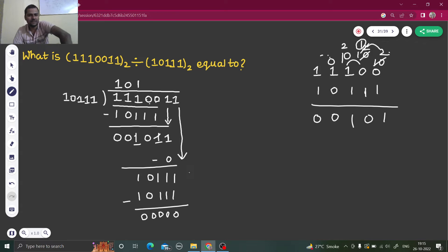So finally, the dividend was one, one, one, zero, zero, one, one. This was the division and finally what you are getting, your result is your quotient. So 101 is your final answer. So when I divided 1110011 by 10111 I got 101 as my final answer.